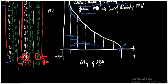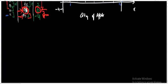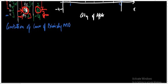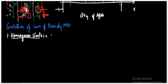Now let me talk about certain limitations of the law of diminishing marginal utility. The first limitation is homogeneous units. The law assumes that all units of consumption should be identical in all respects.